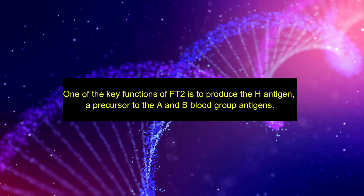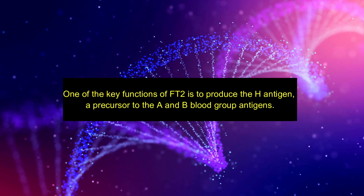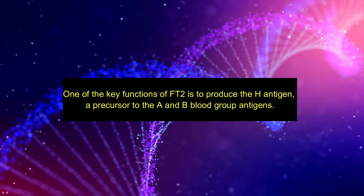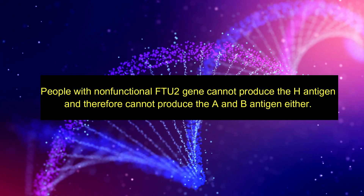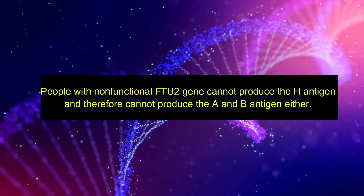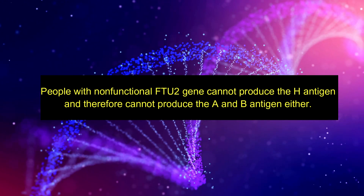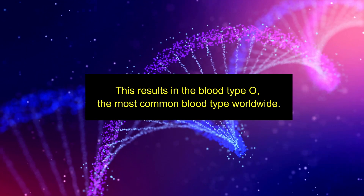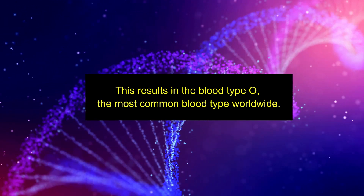One of the key functions of FUT2 is to produce the H antigen, a precursor to the A and B blood group antigens. People with a non-functional FUT2 gene cannot produce the H antigen and therefore cannot produce the A and B antigens either. This results in blood type O, the most common blood type worldwide.